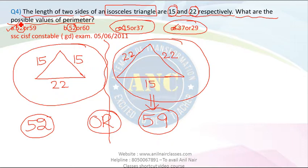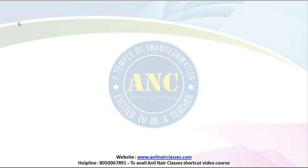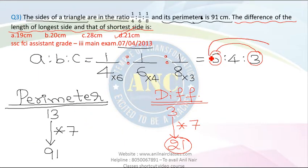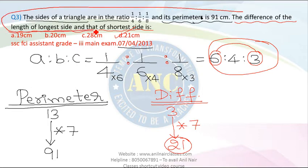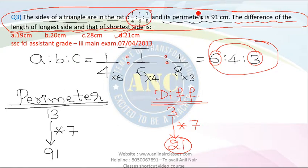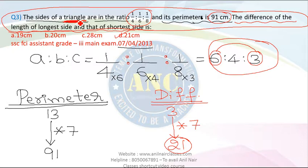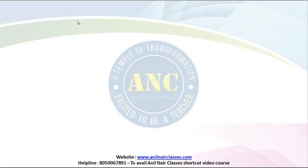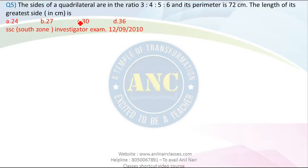The answer is 52 or 59. This is a very easy question. The first three questions involved triangles where the side ratio and perimeter were given, and we had to find the longest, smallest, or difference between sides. Similar logic applies to quadrilaterals as well, since the topic heading says perimeters of triangle and quadrilateral.